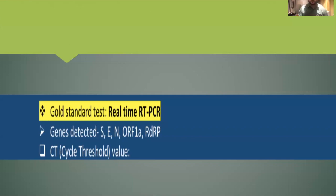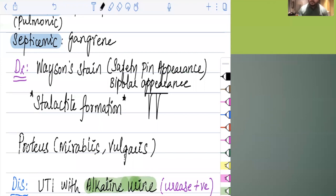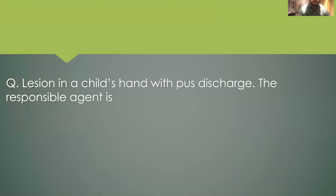Safety pin appearance was given — this refers to the bipolar staining pattern. We learned about the bipolar stain or safety pin appearance. From what students told me, Yersinia pestis was in the options and that is the correct answer. Safety pin or bipolar appearance is seen on Wayson stain. It is not the only organism with bipolar staining, but given the options mentioned, Yersinia pestis would be the answer.